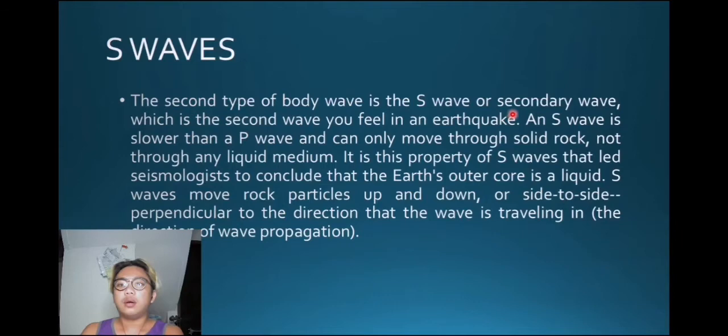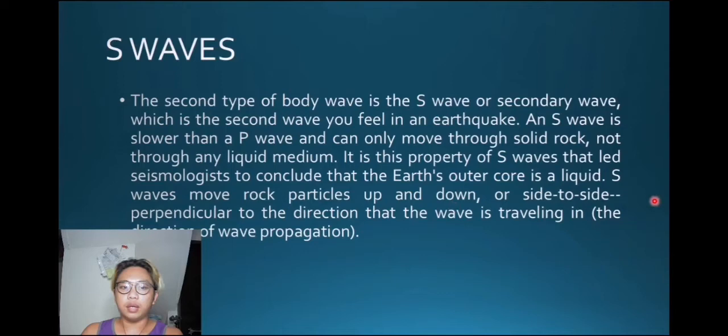P waves are also known as a compressional wave. Because of the pushing and pulling they do subject to a P wave. Particles move in the same direction that the wave is moving, which is the direction that the energy is traveling in, and is sometimes called the direction of wave propagation. The other type is the S waves, or secondary waves, which is the second wave you feel in an earthquake, like an aftershock. An S wave is slower than a P wave, and can only move through solid rocks, not through any liquid region. It is the property of S waves that led seismologists to conclude that the Earth's outer core is a liquid. S waves move rock particles up and down, or side to side, perpendicular to the direction that they will be traveling in.